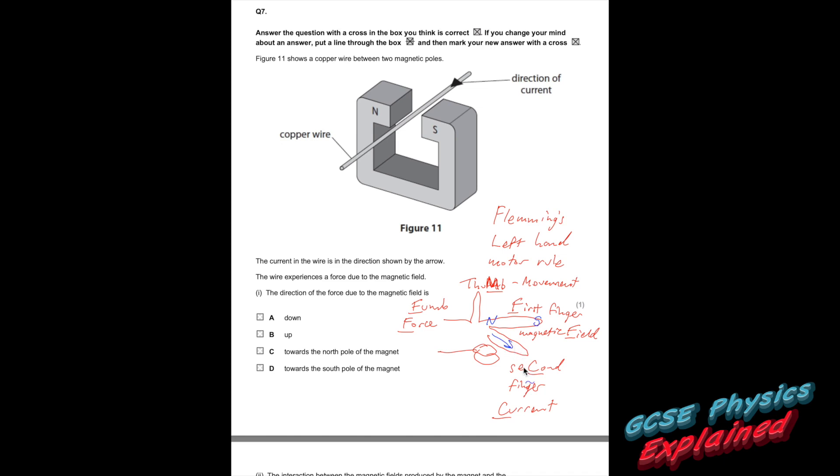So you've got to line your first finger up with the magnetic field from north to south. The second finger needs to go the direction that the current is flowing, which means that your thumb would show the direction that the wire will move. So the wire is going to move upwards. Probably is best to watch my other video about that one, because my drawing is rubbish.